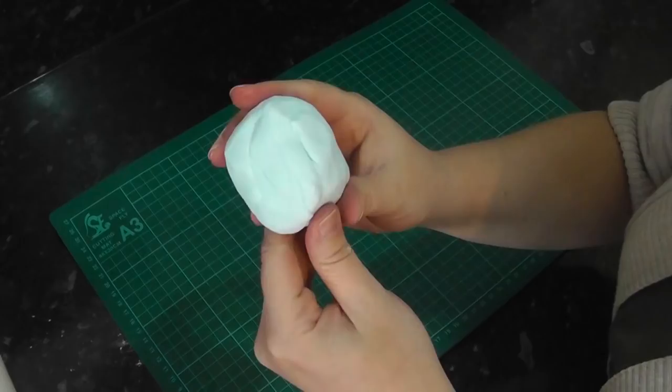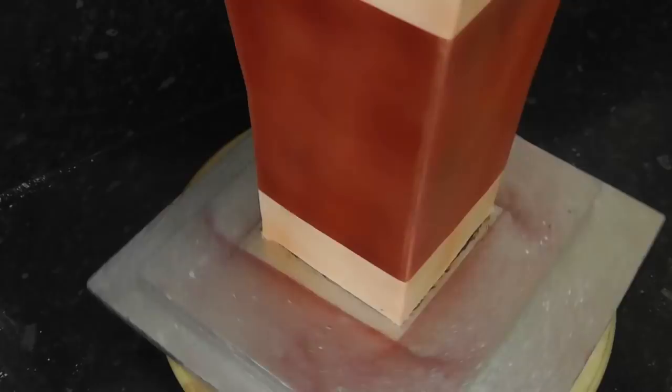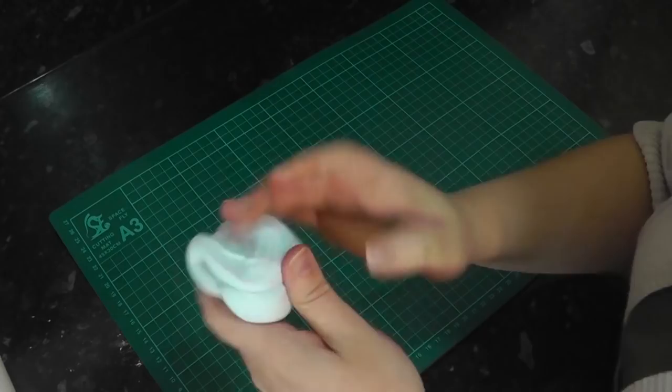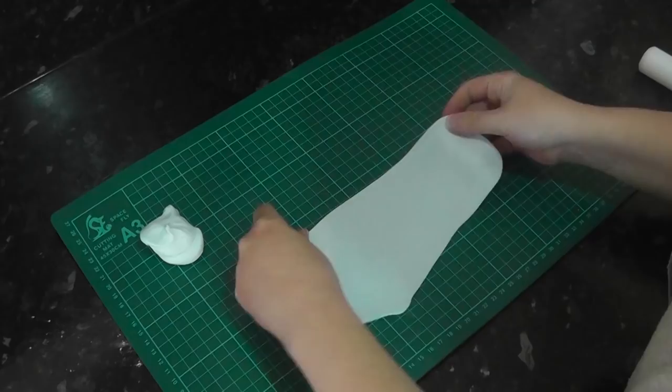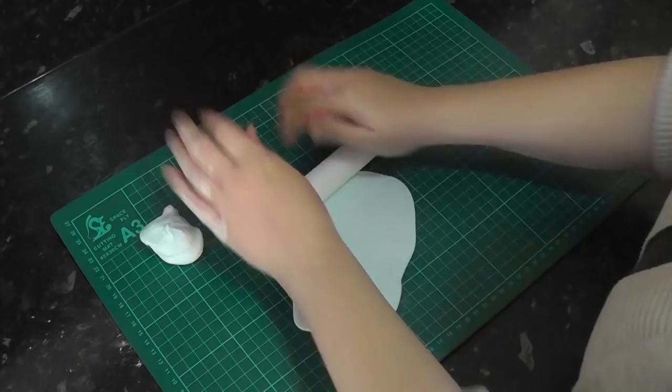Using some pale blue paste with tylo added, we're going to create windows. Roll out the paste and if you have one, pass it through a pasta machine. This ensures they will all be the same thickness. One of the best purchases for cake decorators I reckon.